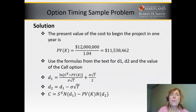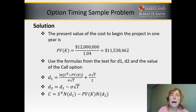The present value of waiting one year to begin the project: we don't spend our cost of $12 million until a year from now, so that's discounted to $11,538,462. That's the cost — now let's find the present value of the whole project.